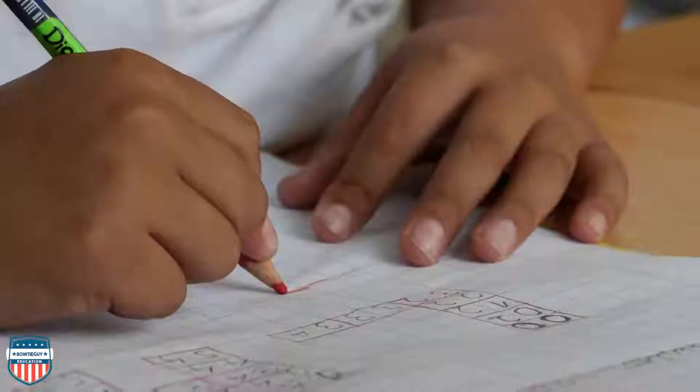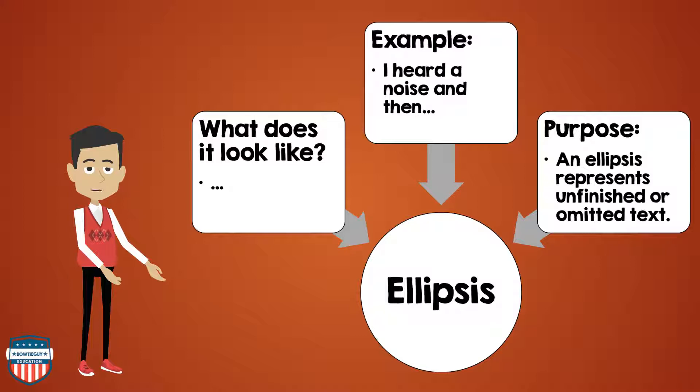Next, let's talk about an ellipsis. What does an ellipsis look like? It's a series of three dots — dot, dot, dot. An example of an ellipsis in use: I heard a noise, and then dot, dot, dot. What is the purpose of an ellipsis? An ellipsis represents unfinished or omitted text.